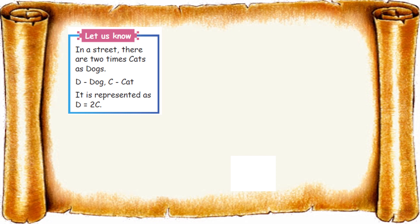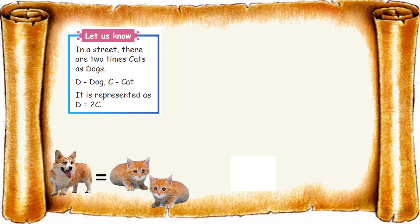Let us know: in a street there are two times as many cats as dogs. D for dog, C for cat. It is represented as D equals 2C. One dog and two cats - that's how it's represented. If two dogs are there, four cats. If five dogs are there, ten cats must be there.